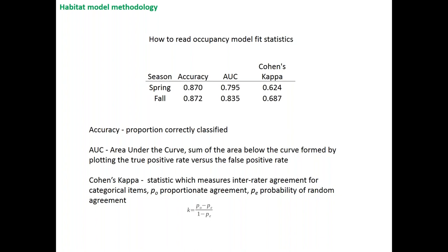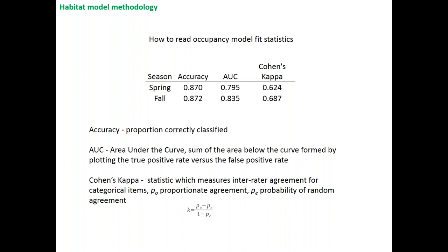AUC scores in the 0.7s and into the 0.8s are okay to good models, while AUC scores above 0.9 are somewhat suspect — they may be too good to be true. I'll also show Cohen's Kappa, which measures inter-rater agreement for categorical items and scales from 0 to 1; values of 0.3 to 0.4 are getting into the range of acceptable models, while 0.5 to 0.6 represent very good models. For the results ahead, I'll focus mainly on AUC scores.